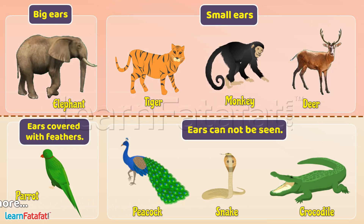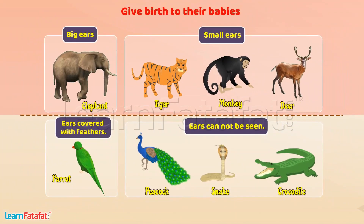It would be interesting for you to know that animals whose ears can be seen have hairs on their body and they give birth to their babies. However, animals whose ears cannot be seen do not have hairs on their body and they lay eggs.